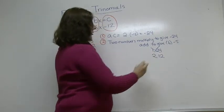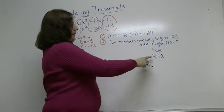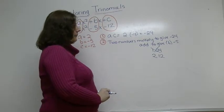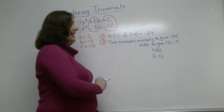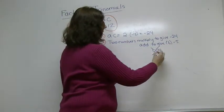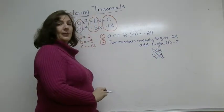So then I'm going to look at the next factor, 2 and 12. If I add 2 and 12, I get 14. If I subtract 2 and 12, I get 10. Again, neither of which is a 5, so that's not going to help me either.